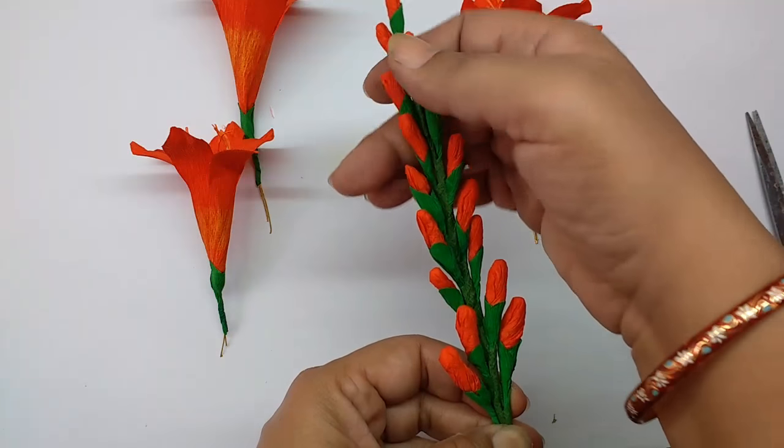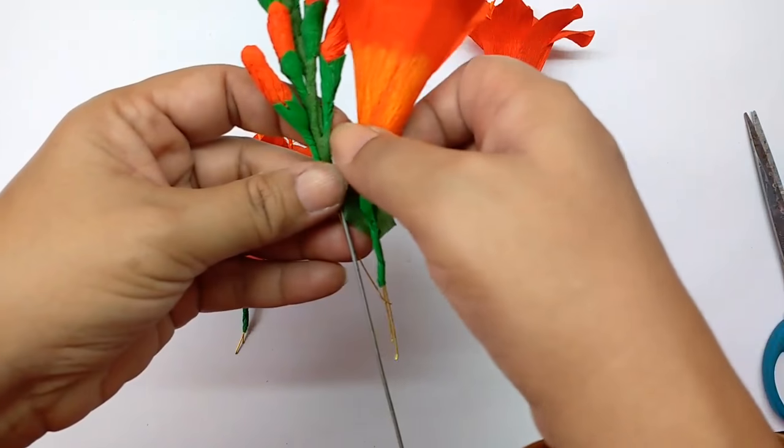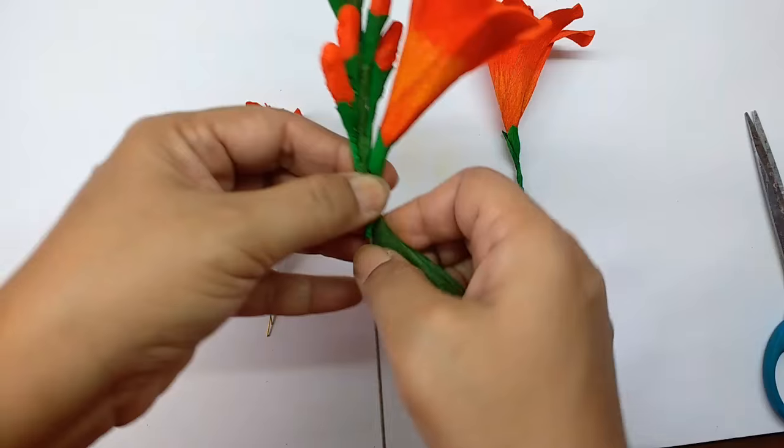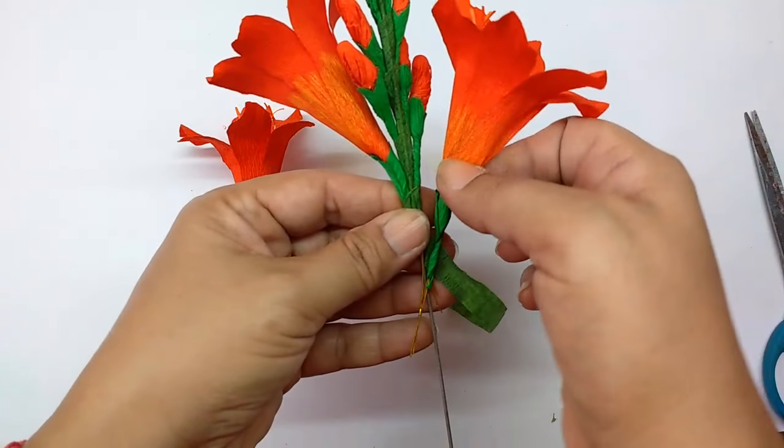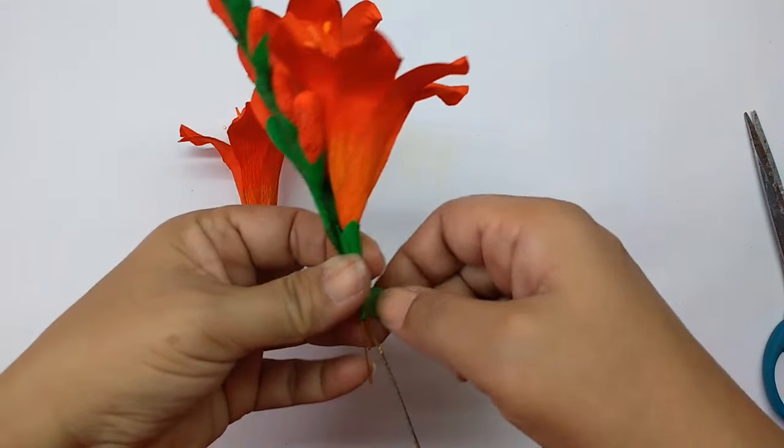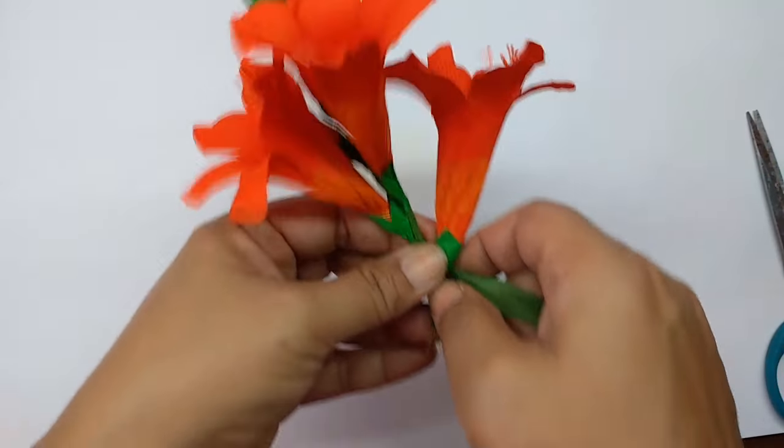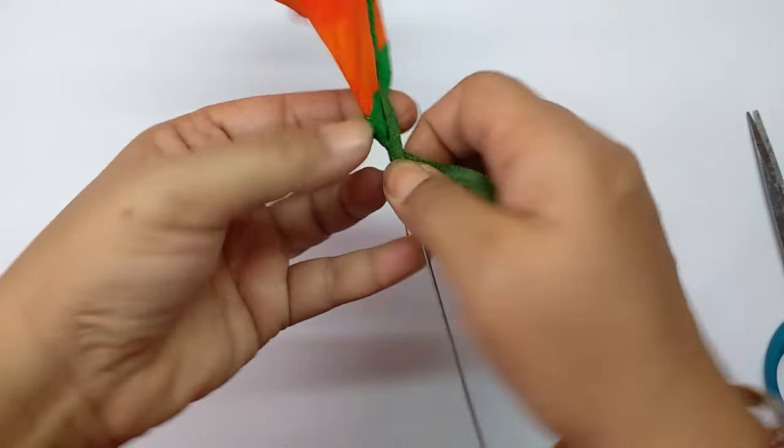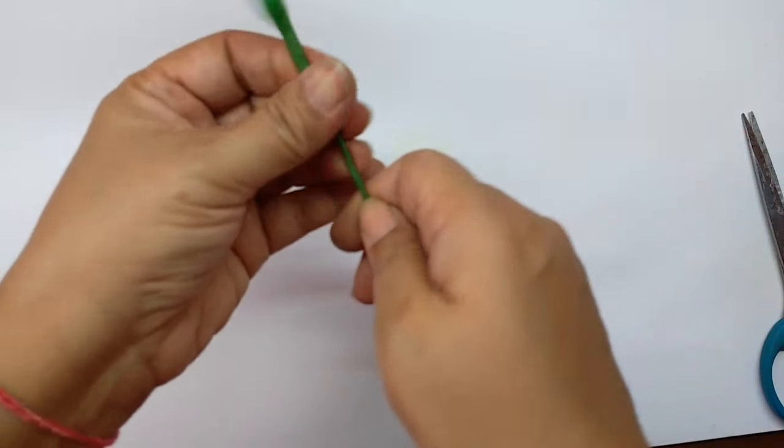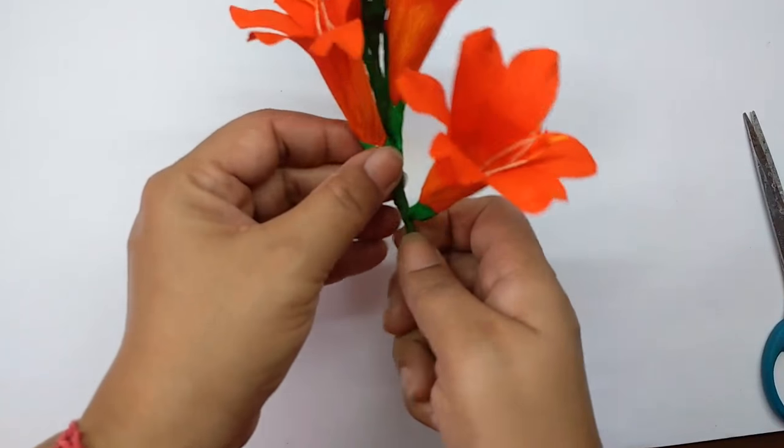This is how it will look. As you can see, they should be just on both sides of the wire, not around it. Similarly attach the flowers. Take the flower and put it on one side. Take the second one, again put it on the side. The buds and flowers should be pretty close to each other. There shouldn't be too much of a gap.